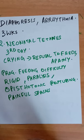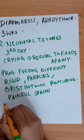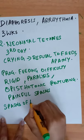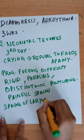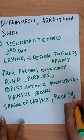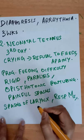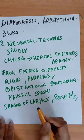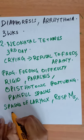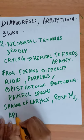There will be spasms of the larynx and respiratory muscles, characteristically induced by stimuli such as touch, noise, and bright light. There can be episodes of apnea and cyanosis.